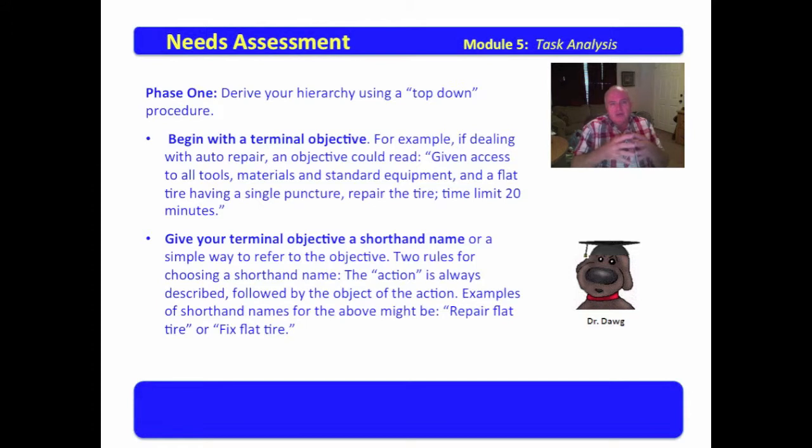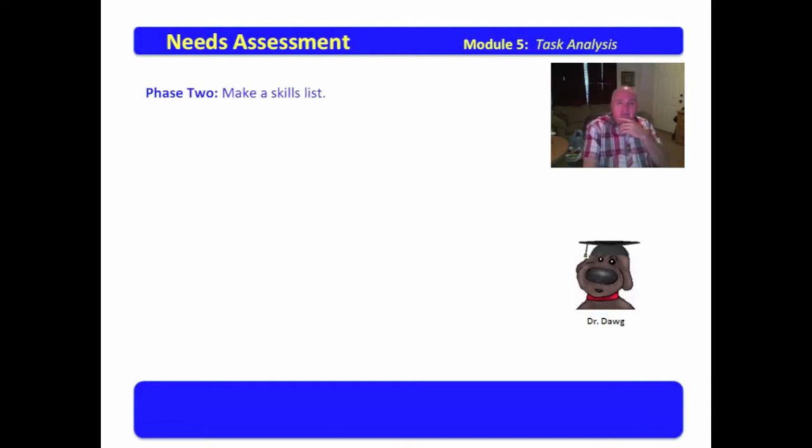Now, when you get your terminal objective identified, you want to give it a shorthand name. We don't want a name that's six miles long. There are two rules for choosing a shorthand name. The action is always described, followed by the object of the action. Examples follow such as repair flat tire or fixed flat tire. Those are good terminal objective names.